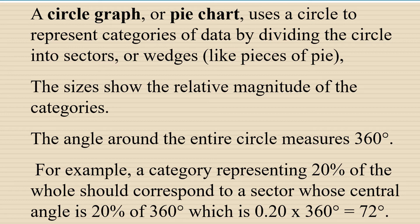You can calculate that by multiplying the decimal form of 20%, which is 0.20, by 360 degrees, which gives you 72 degrees.